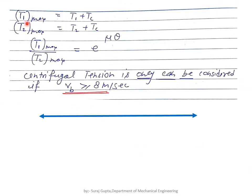Therefore, T₁_max = T₁ + Tc and T₂_max = T₂ + Tc, and the tension ratio formula becomes T₁_max/T₂_max = e^(μθ). However, centrifugal tension should only be considered when the belt velocity is greater than or equal to 8 m/s. Below 8 m/s, Tc is negligibly small and does not significantly affect belt performance, power, or tension ratio.